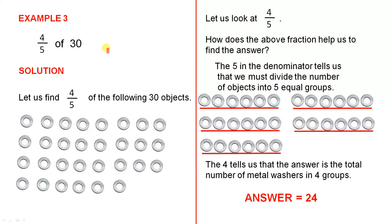Four fifths of 30. Let us find 4 fifths of the following 30 objects. These here are metal washers. So there are 30 of them.